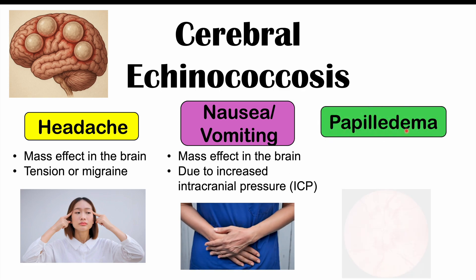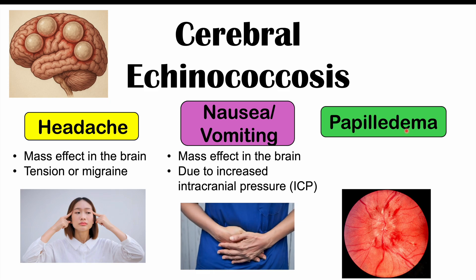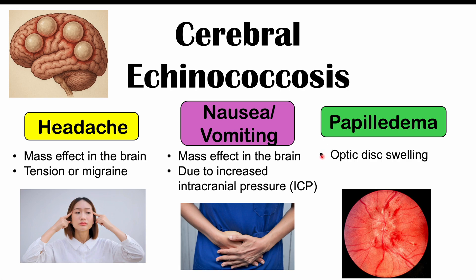We can also see papilledema — optic disc swelling — visible when looking at the back of the eye with an ophthalmoscope. The optic disc appears swollen with distorted arteries, also due to increased ICP. Depending on the location of the cyst in the brain, we may see other focal neurological deficits as well. These are some of the main signs and symptoms of cerebral involvement, though other neurological issues may also occur.